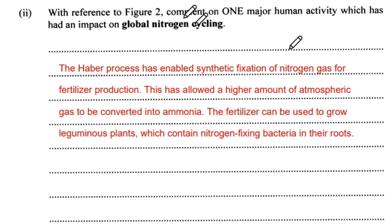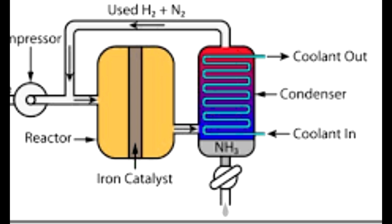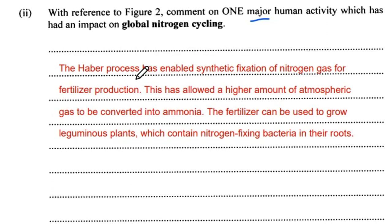Part 2: comment on one major human activity which has had an impact on global nitrogen cycling. The Haber process, without the use of bacteria, has enabled the synthetic fixation of nitrogen gas — typically to make fertilizers — allowing a higher amount of atmospheric nitrogen to be converted into ammonia. Fertilizer can be used by farmers to grow leguminous plants, which in particular have nitrogen-fixing bacteria in their root nodules, further increasing the rate of nitrogen fixation.